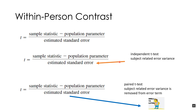Adding error to the denominator makes the t-value smaller and less likely to be significant, reducing statistical power. This principle of tossing out or reducing error variance is something we'll apply in every inferential test this semester. One very common way is to identify and remove error variance associated with subjects themselves.